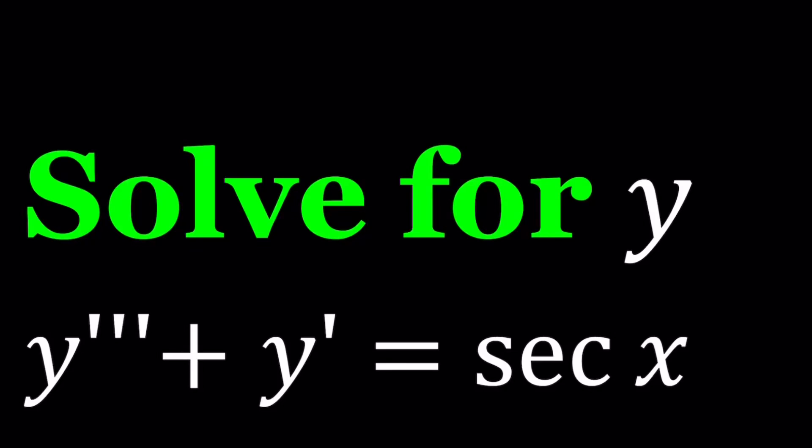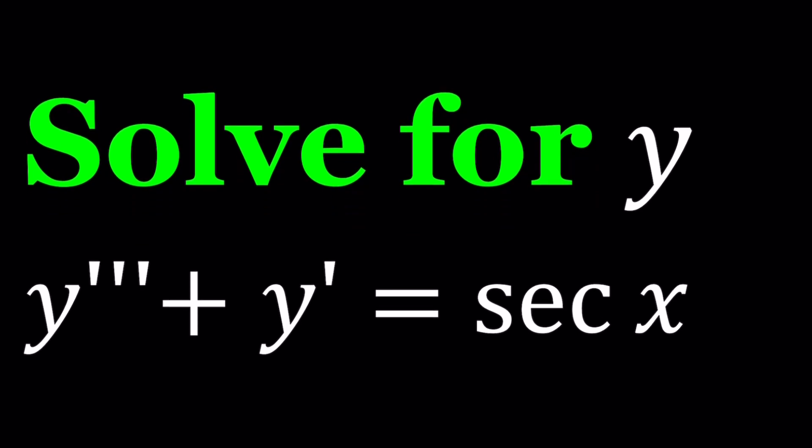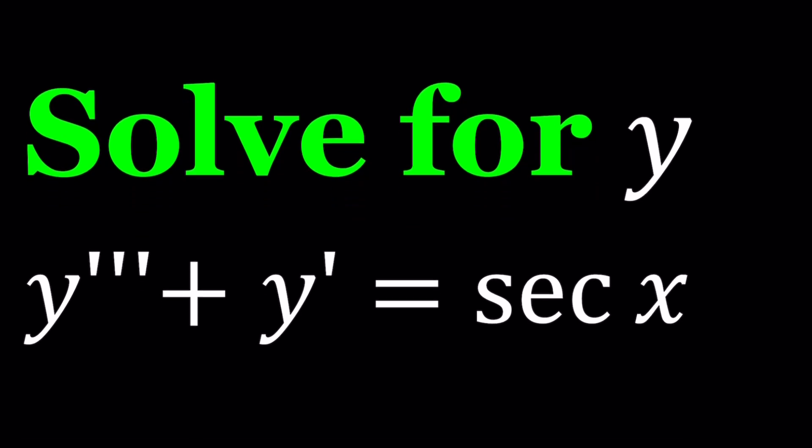Hello everyone. In this video we're going to be solving a differential equation. We have y triple prime plus y prime equals secant x and we're going to be solving for y. This is a really nice differential equation which can't be solved very easily. We have to use a special method — if you have any other ideas, please let us know in the comment section.